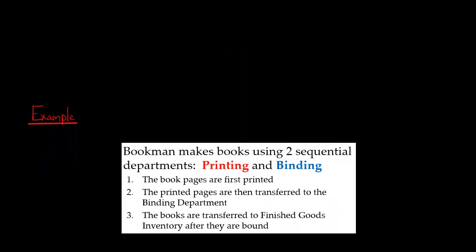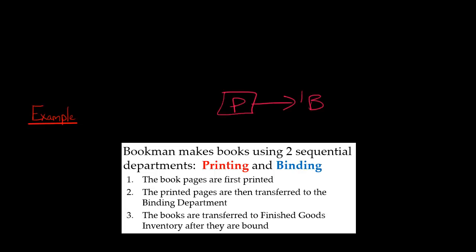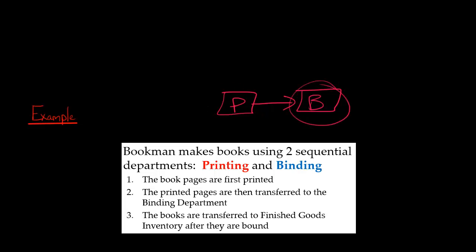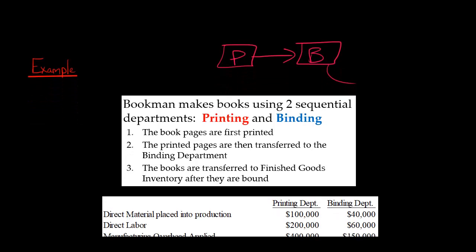We've got a company called Bookman, and they make books using two sequential production departments. They've got the printing department, where we first print the pages, and then we transfer the pages to the binding department, where they're bound into a book. The work in process of the printing department is going to become the work in process of the binding department. And when the binding department is done, we're going to transfer the costs into finished goods inventory. That's the flow of costs.